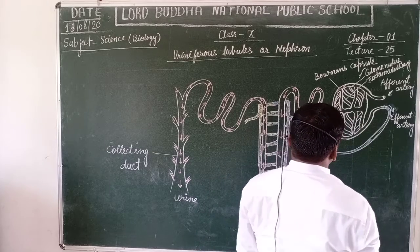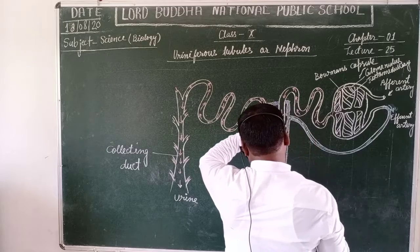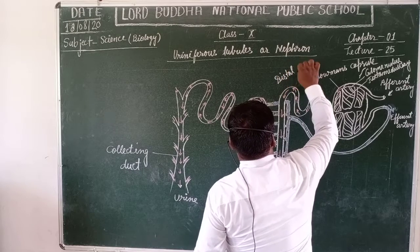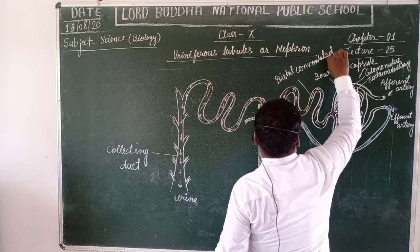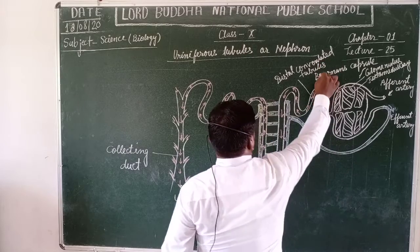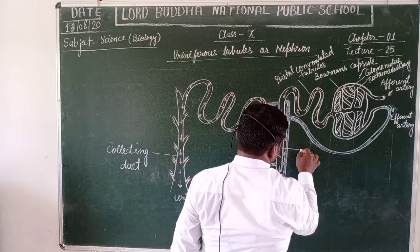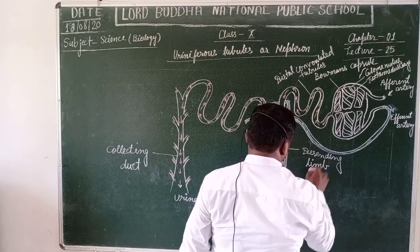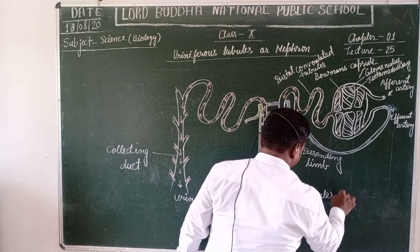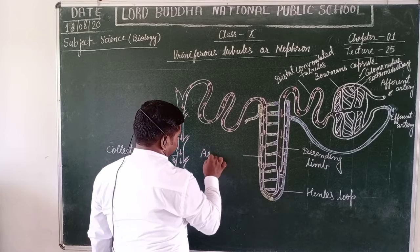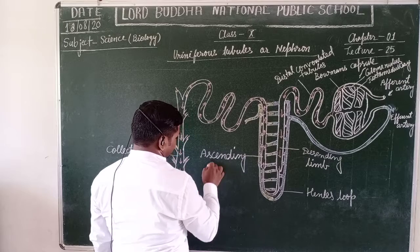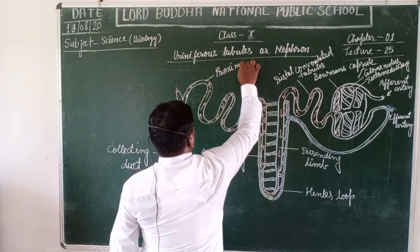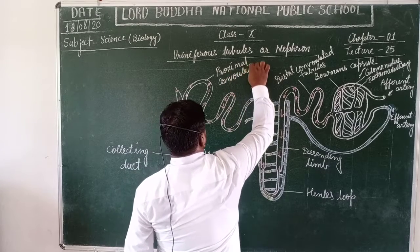This structure is known as the Distal Convoluted Tubules. This is the Loop of Henle, and this is the Descending Loop of Henle, or Henle's loop. This is the Ascending Loop of Henle. And this is the Proximal Convoluted Tubules.